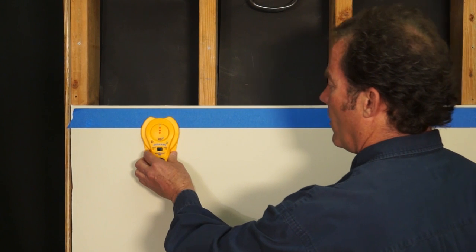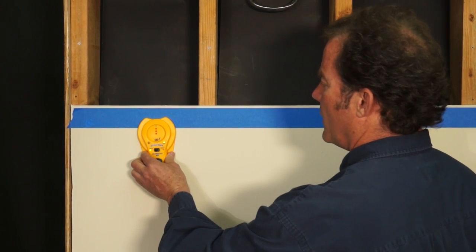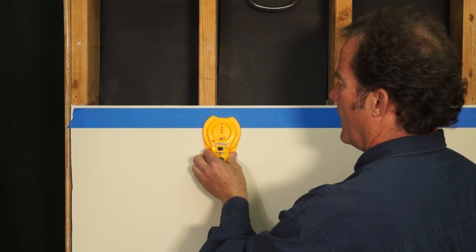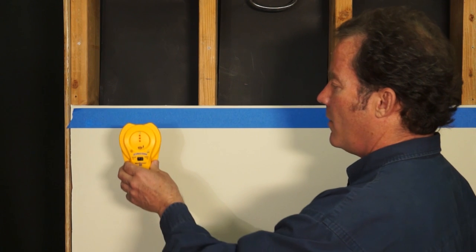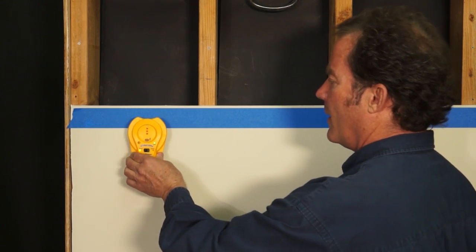First, place the StudSensor 40 firmly against the wall and then press the button to calibrate the unit. A common mistake people make is to press the button too soon before the unit's against the wall, and if you do that, the unit will calibrate to thin air instead of calibrating to your specific wall surface.